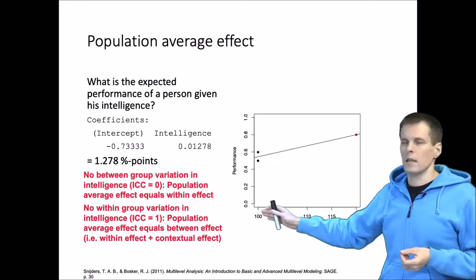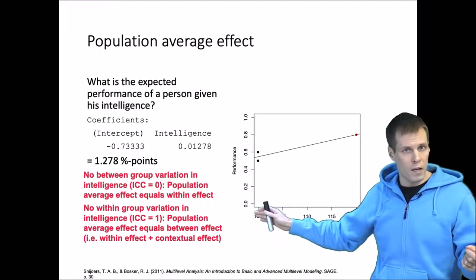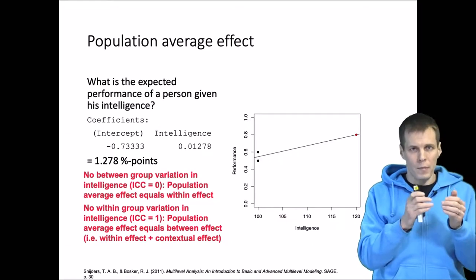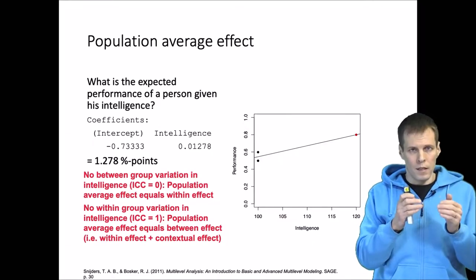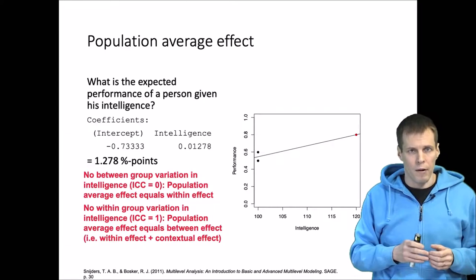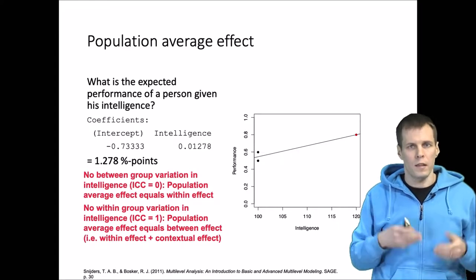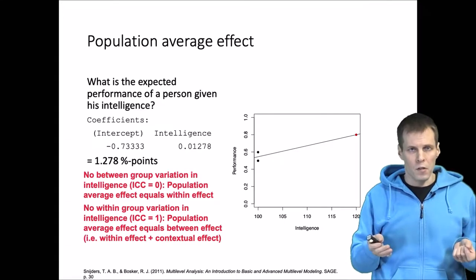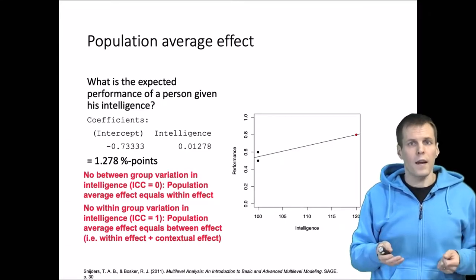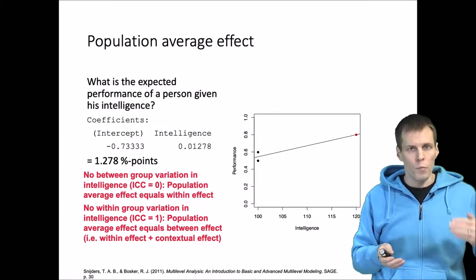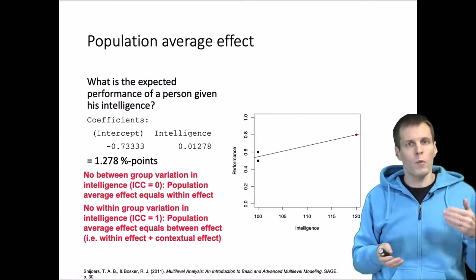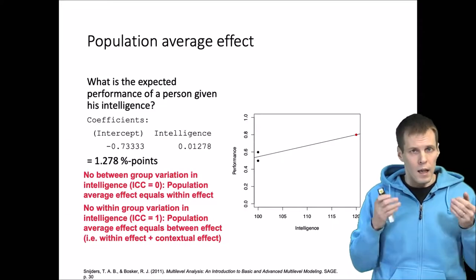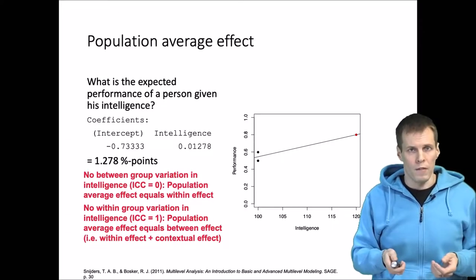In the other case, if there is no within-group variation — so every member in every team has the same intelligence but intelligence levels between teams can vary — then the intraclass correlation (ICC), which quantifies between-group variation, is 1. In that case, if we know your group average, we know your performance. So the between effect equals the population average effect.